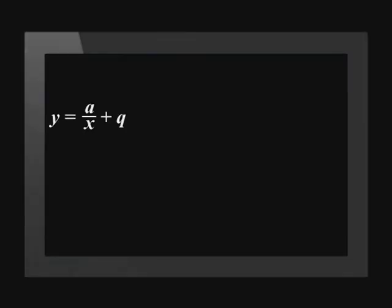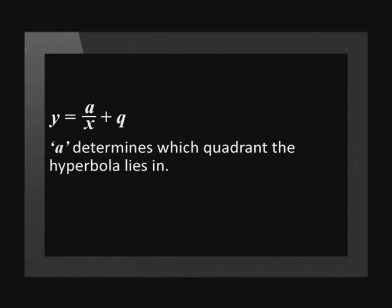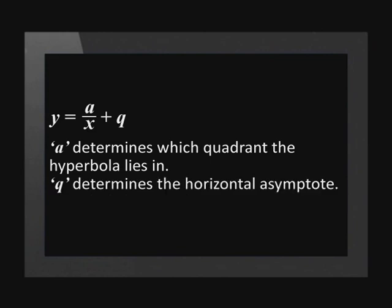The standard equation we used in grade 10 for the hyperbola is y = a/x + q. a is the constant that determines which quadrant the hyperbola lies in, while q determines the horizontal asymptote and the vertical shift.